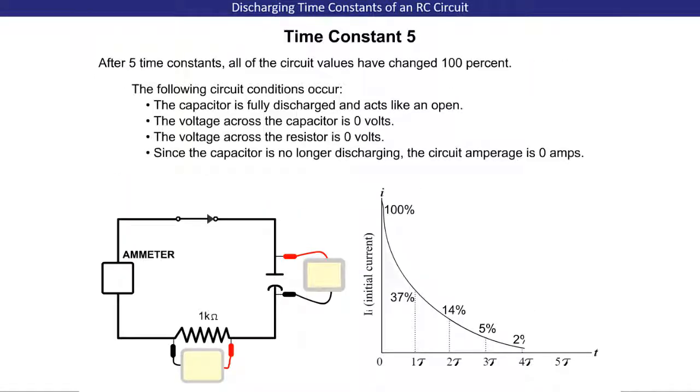After five time constants, all of the circuit values have changed 100%. The following circuit conditions occur. The capacitor is fully discharged and acts like an open. The voltage across the capacitor is 0 volts. The voltage across the resistor is 0 volts. And since the capacitor is no longer discharging, the circuit amperage is 0 amps.